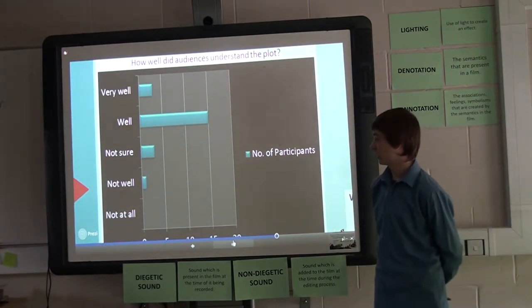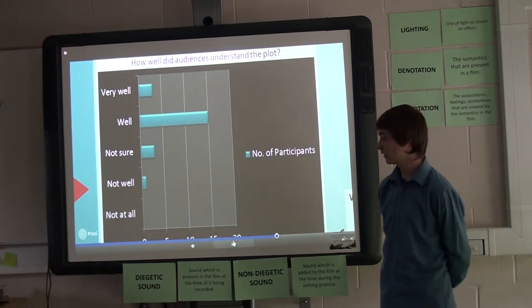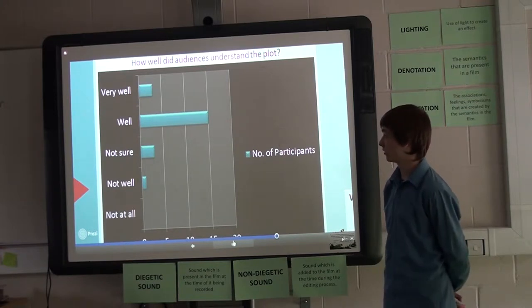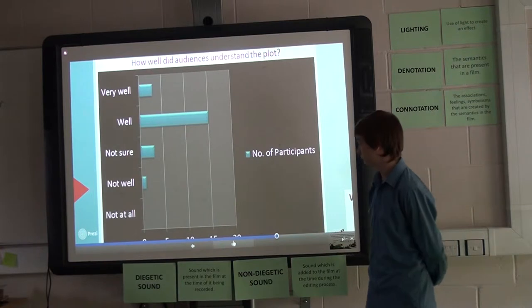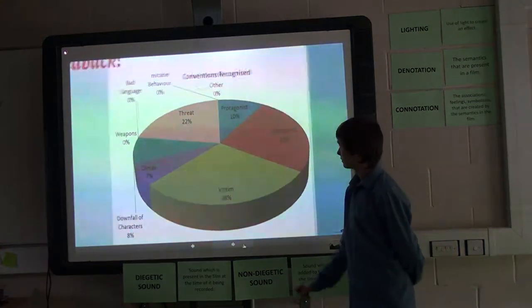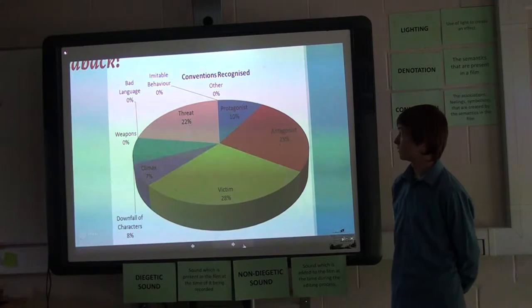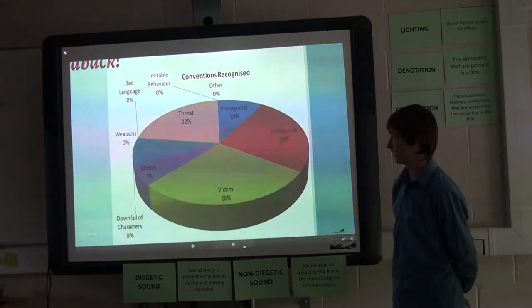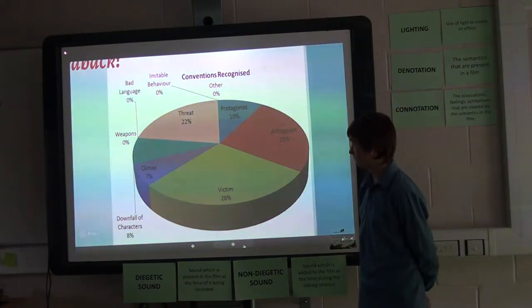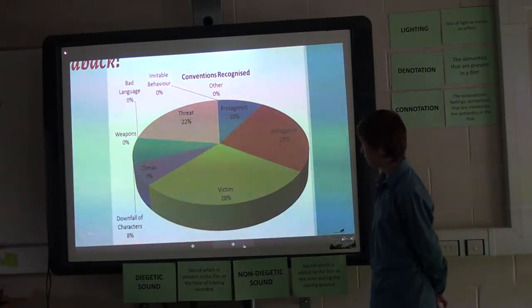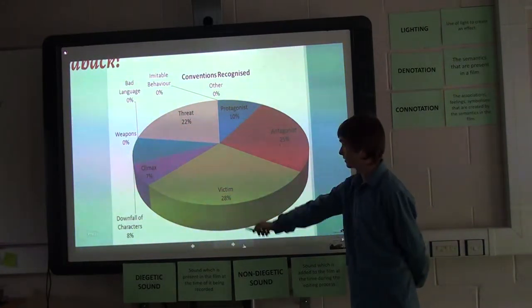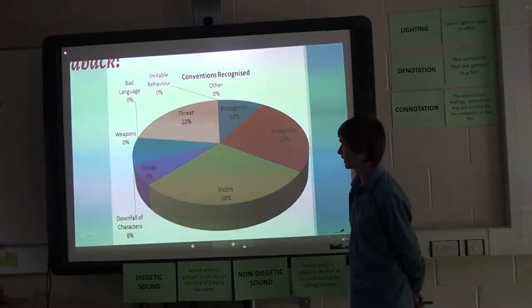We also gathered if they understood the plot, and even though some did not understand it at all, or weren't very sure, most or at least half of the audience gathered the plot very well and understood it. We also asked them to look out for conventions, and they have realized and looked for the conventions, which were clearly seen in the trailer. And the most people recognized was the victim and the antagonist and threat in it.